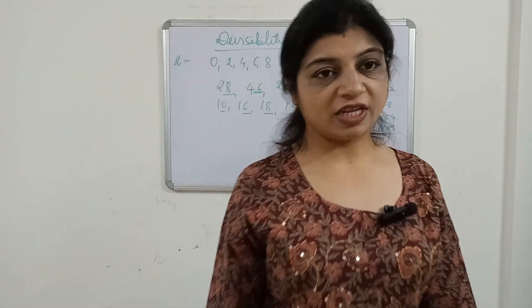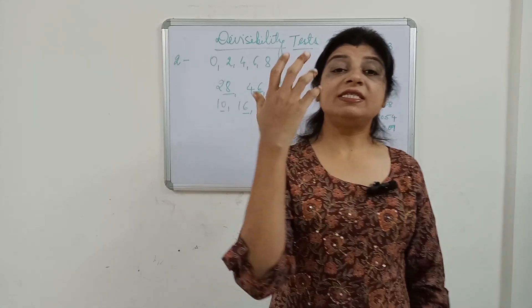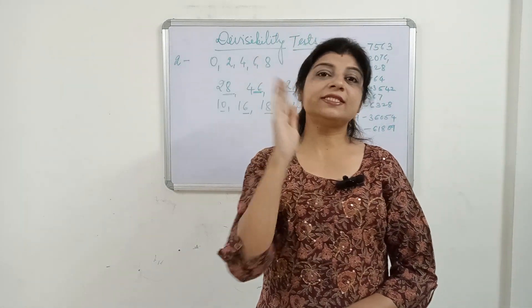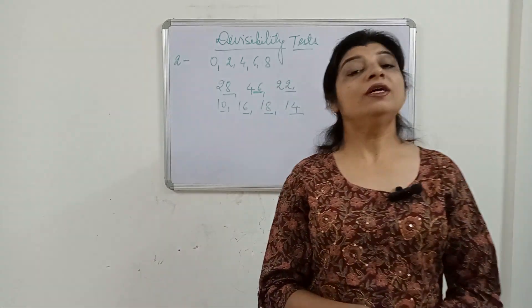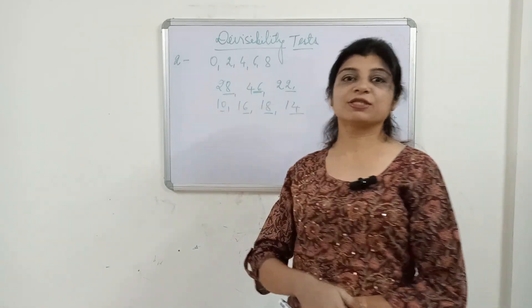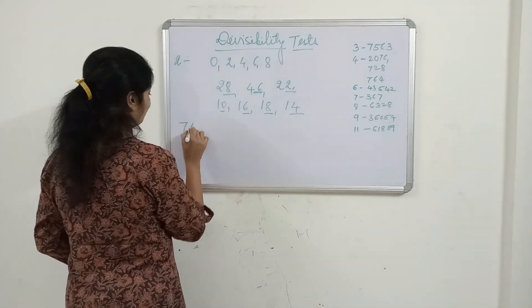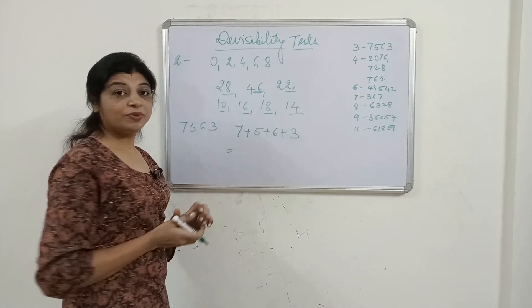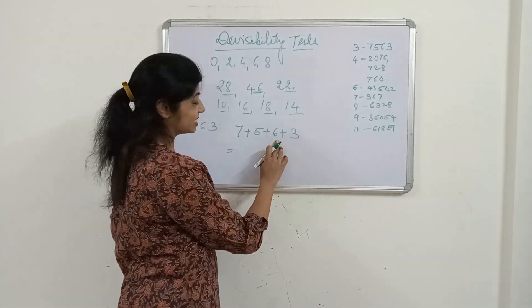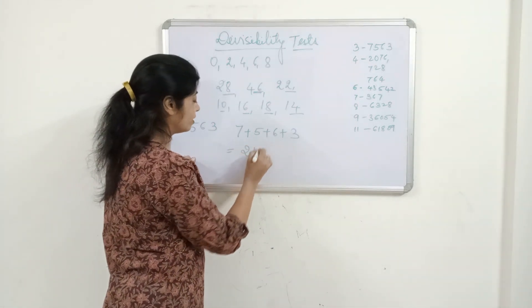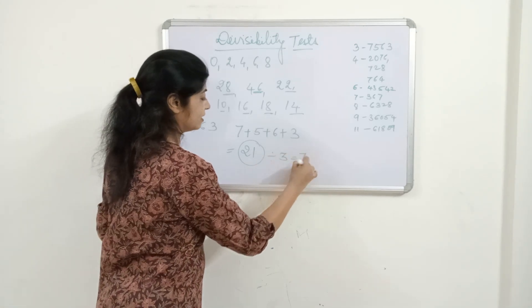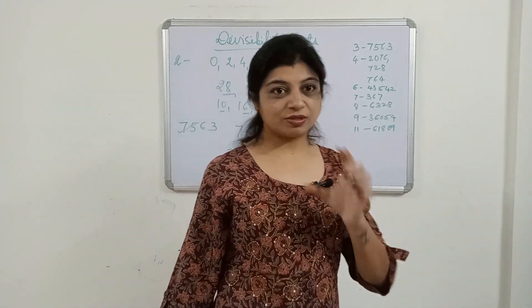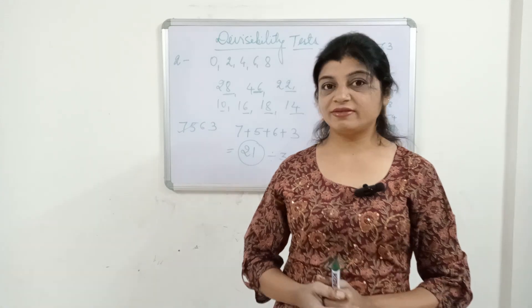Next is the divisibility test of 3. A number is divisible by 3 when the sum of its digits is divisible by 3. For example, take the number 7563. We add: 7 plus 5 plus 6 plus 3. That gives 9 plus 5 equals 14, and 14 plus 7 equals 21. Since 21 is divisible by 3, the number 7563 is divisible by 3.